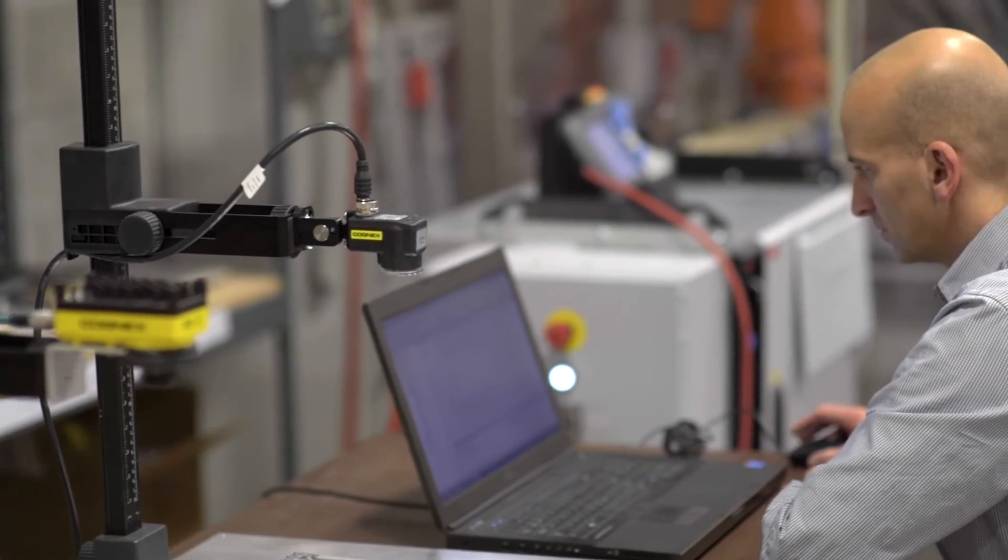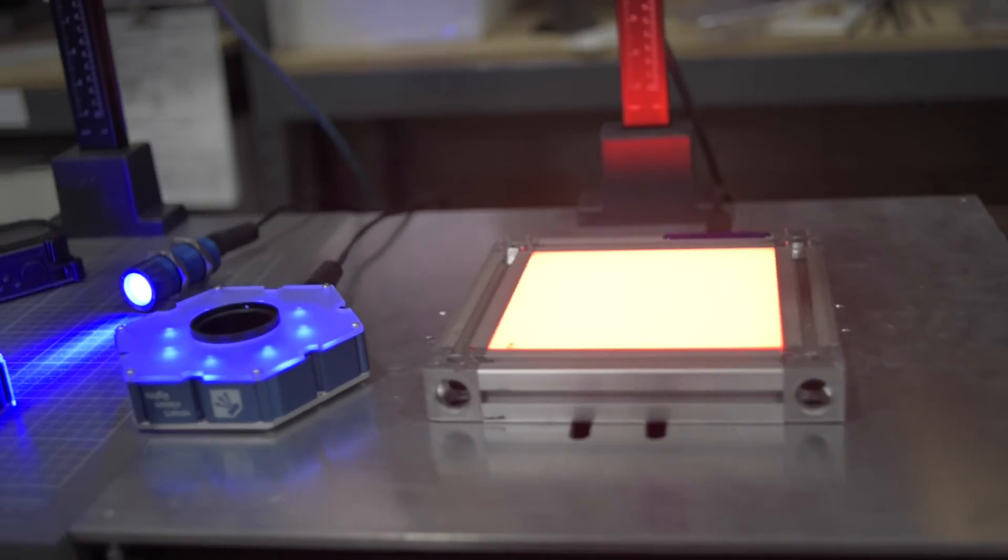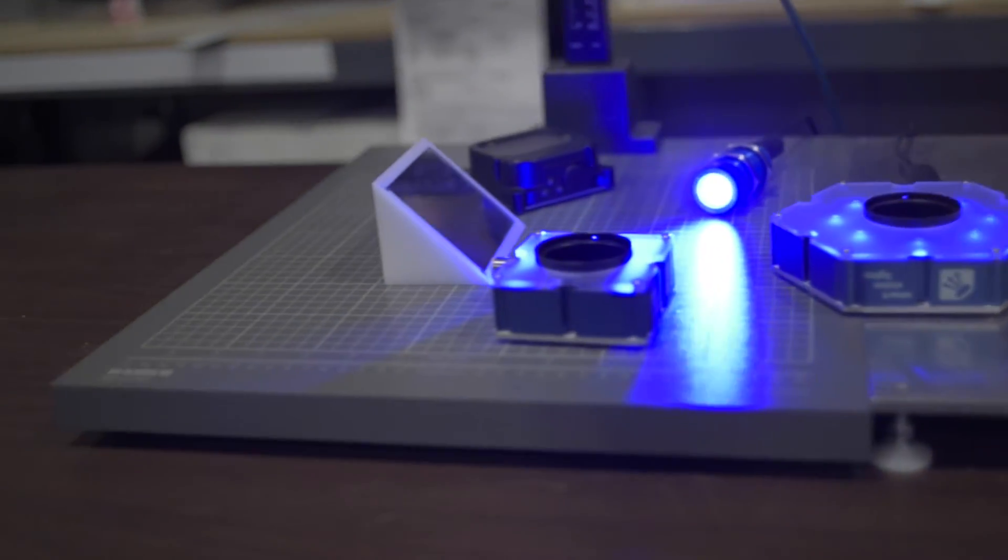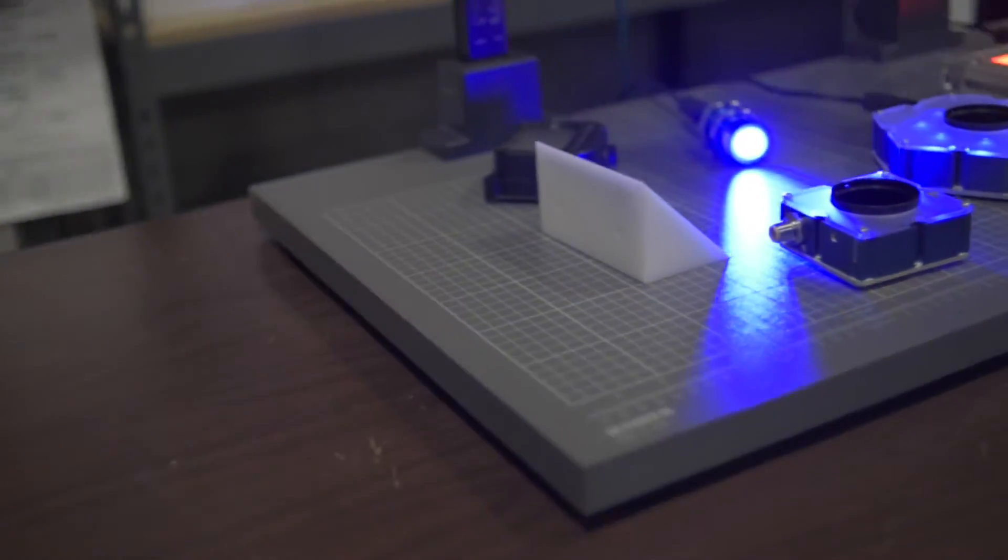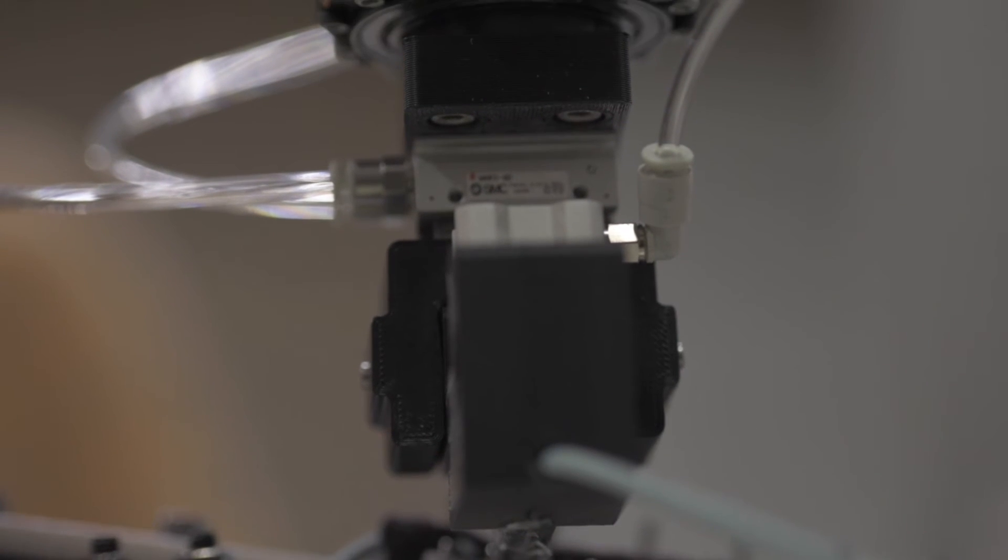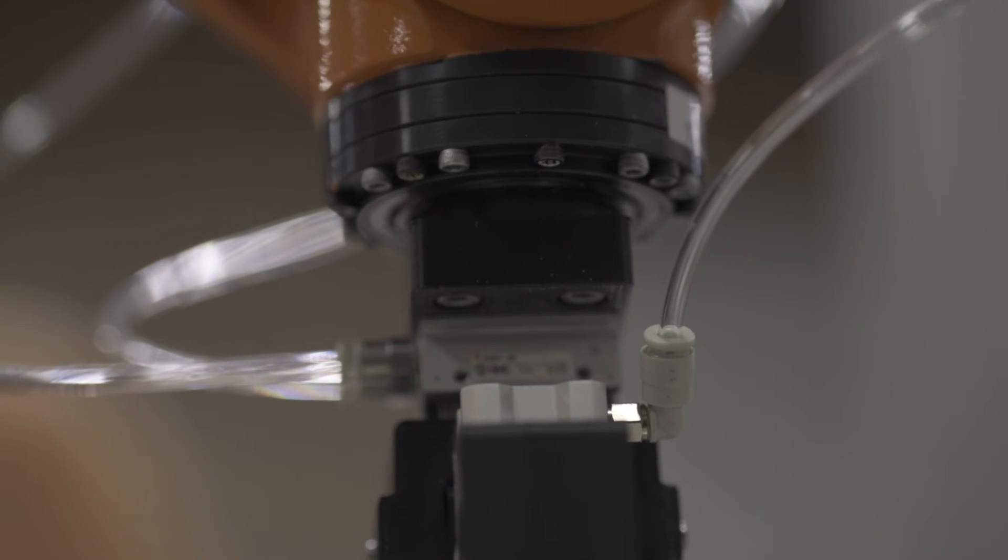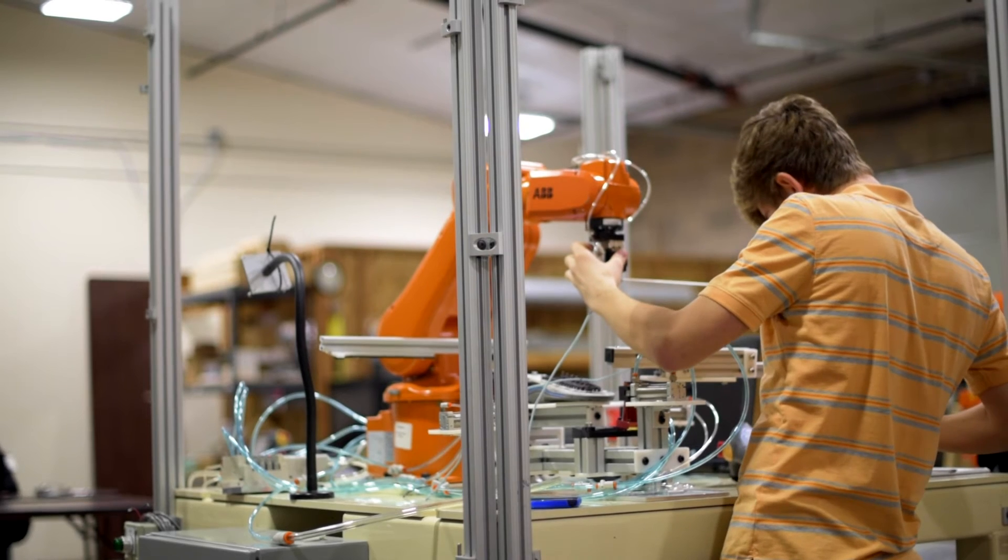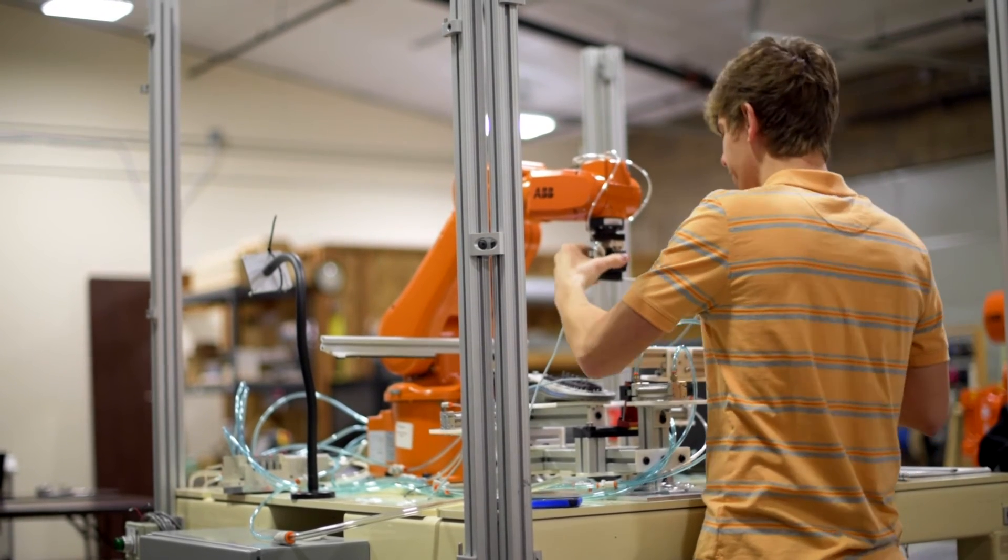You can do hard fixed automation, which is expensive, and when your product changes and you no longer need that process, you're going to throw it away. With a robotic cell, you're going to buy a robot into a process, and when your product or process changes, you have a capital piece of equipment that you can take and repurpose into your next process line.